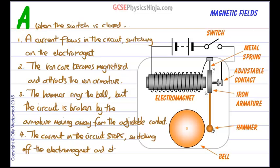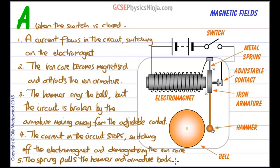Number five, the spring pulls the hammer and armature back. It makes contact again, causing a current to flow and repeating the process.